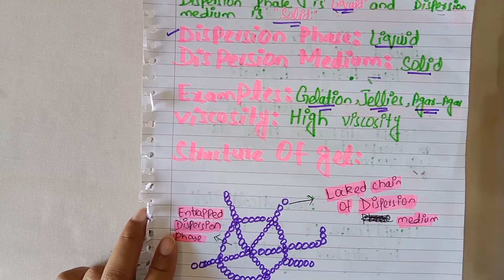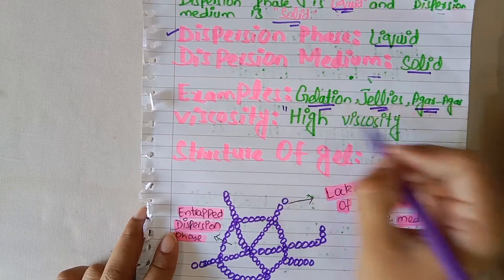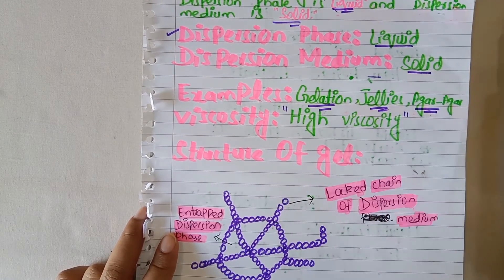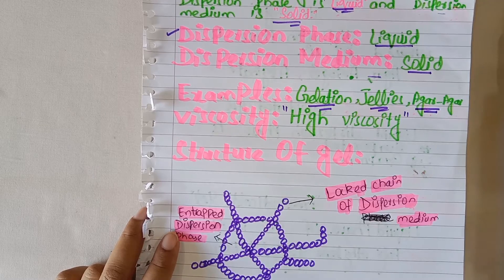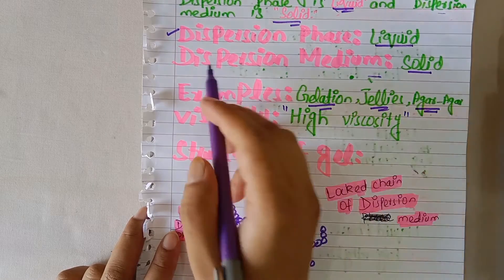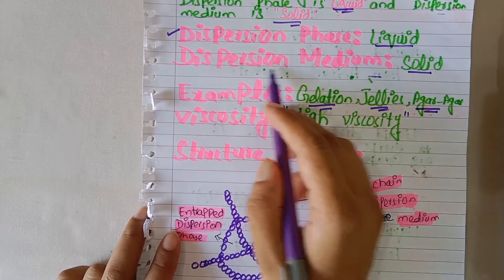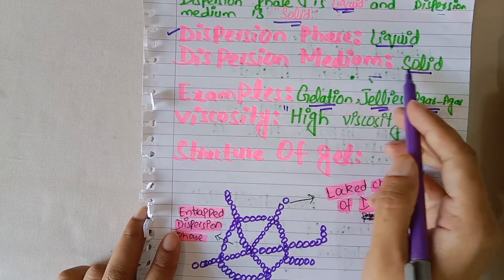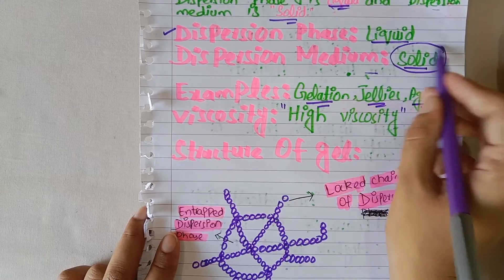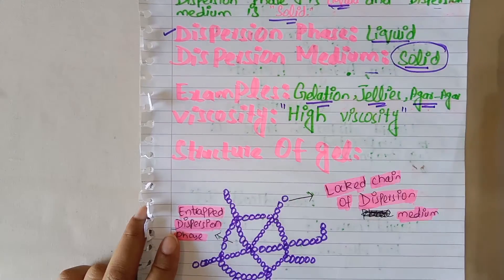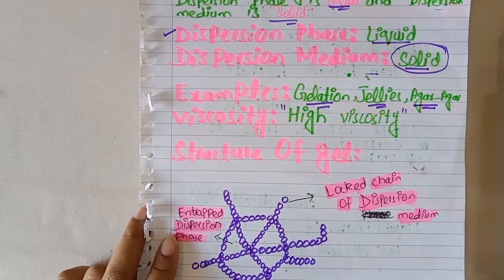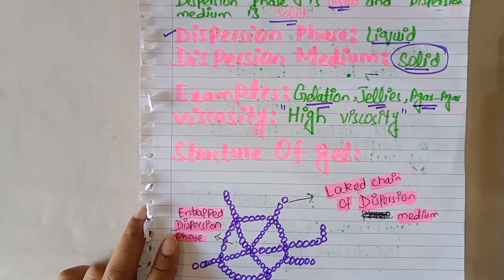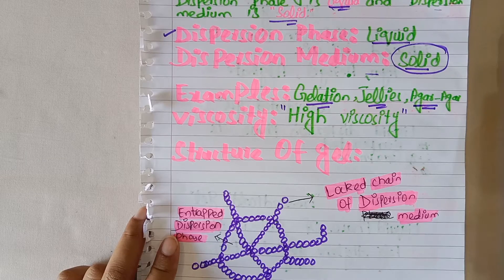If we discuss the viscosity of gels, they have high viscosity. The reason behind their high viscosity is that the dispersion medium is solid. Due to this solid medium — a massive medium — gels have high viscosity and are viscous in nature.